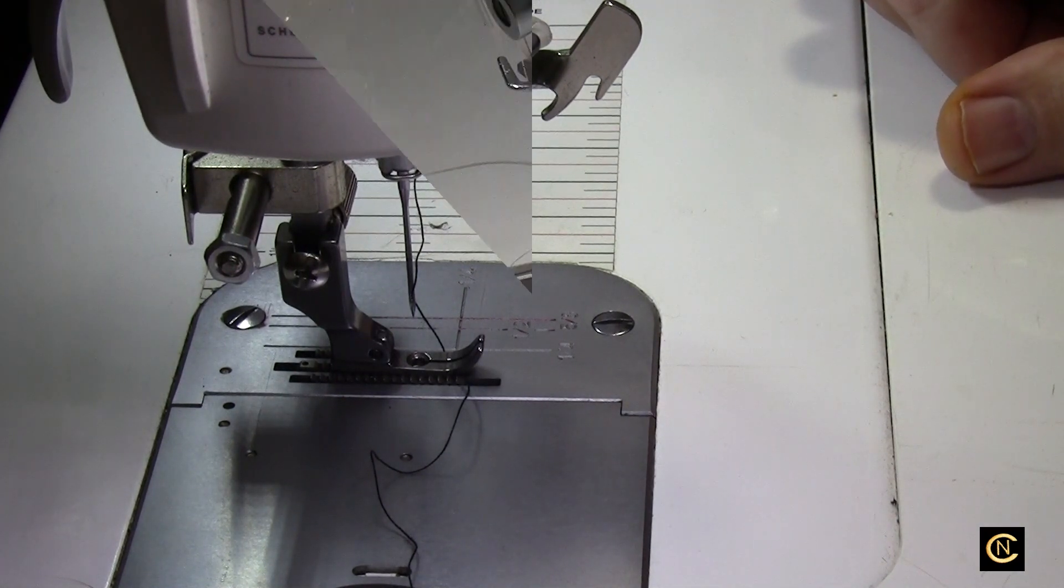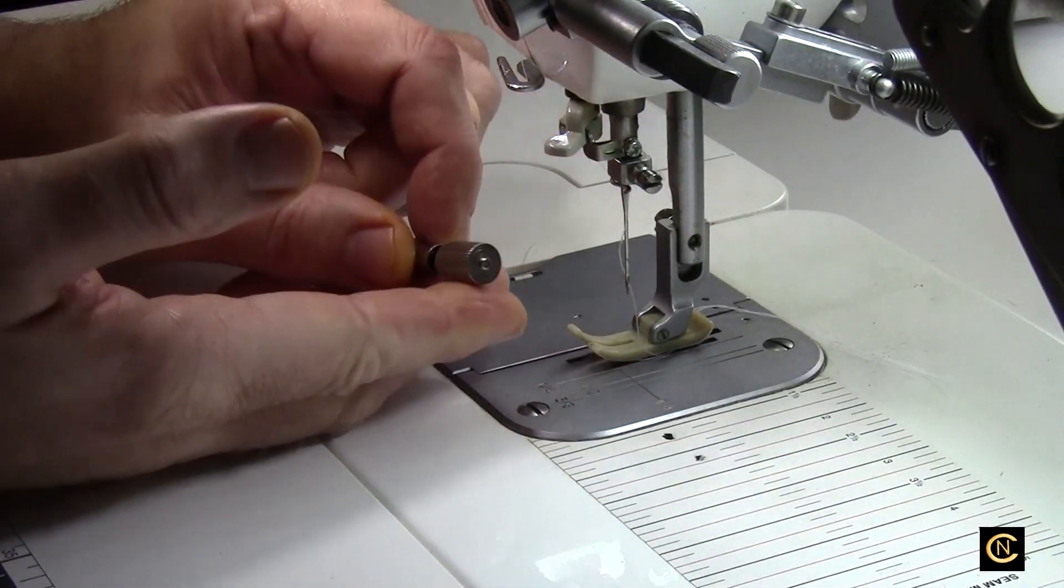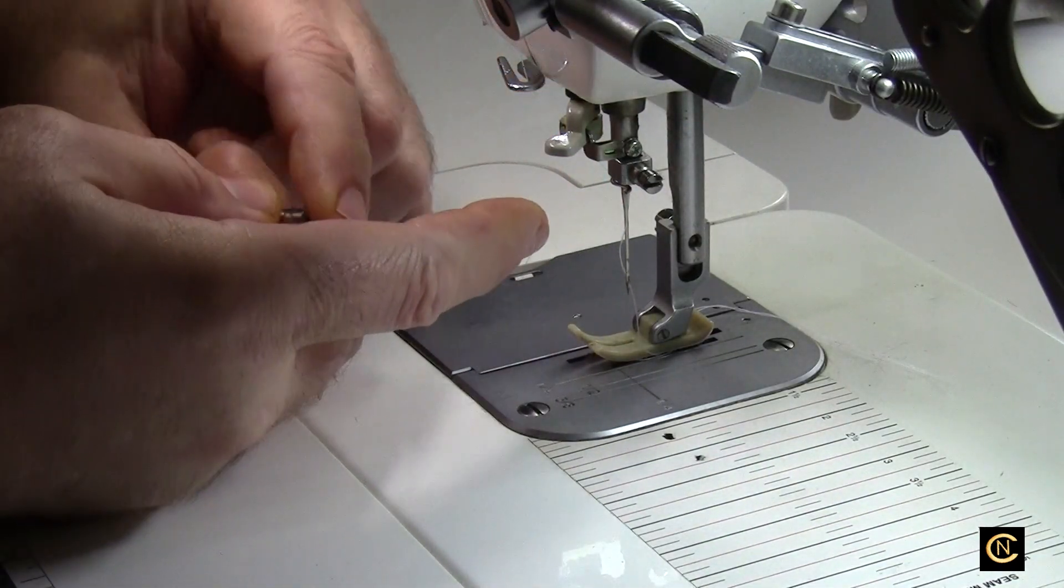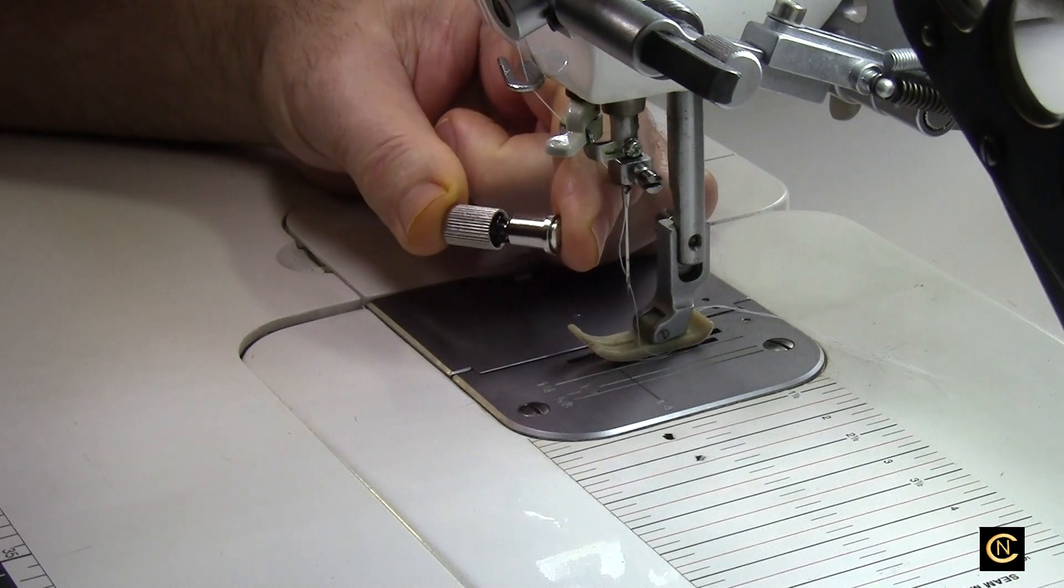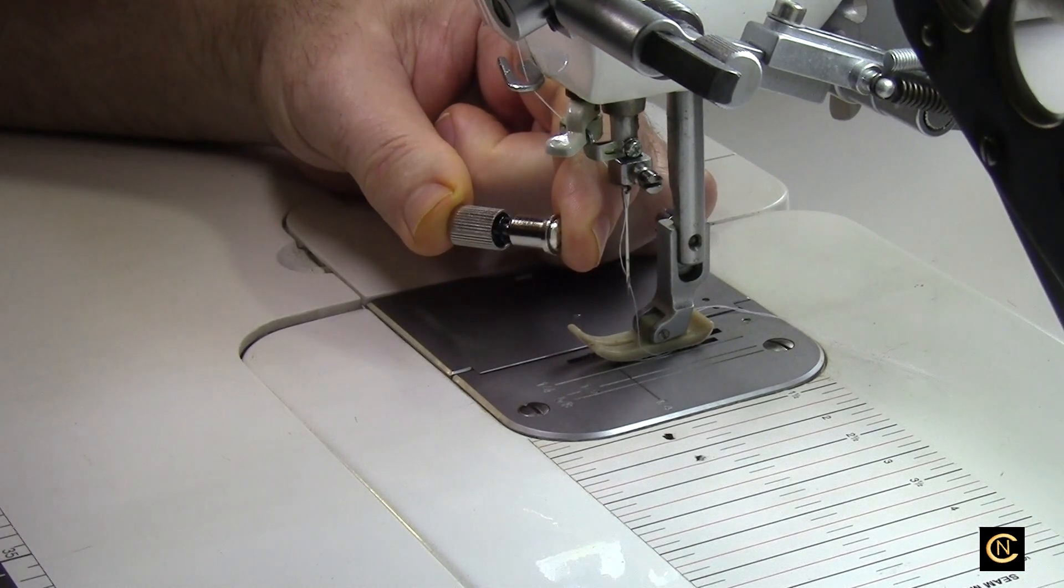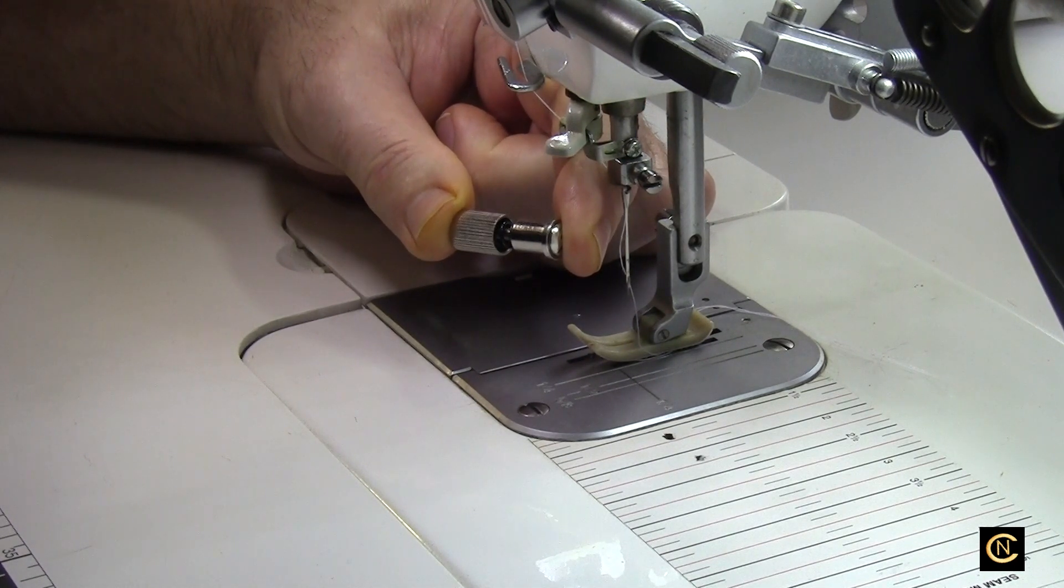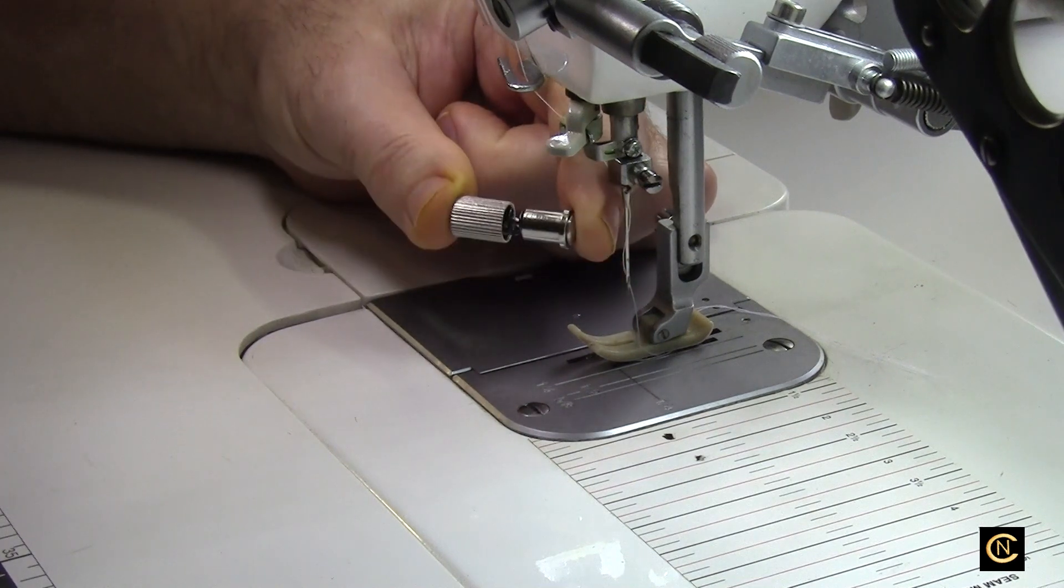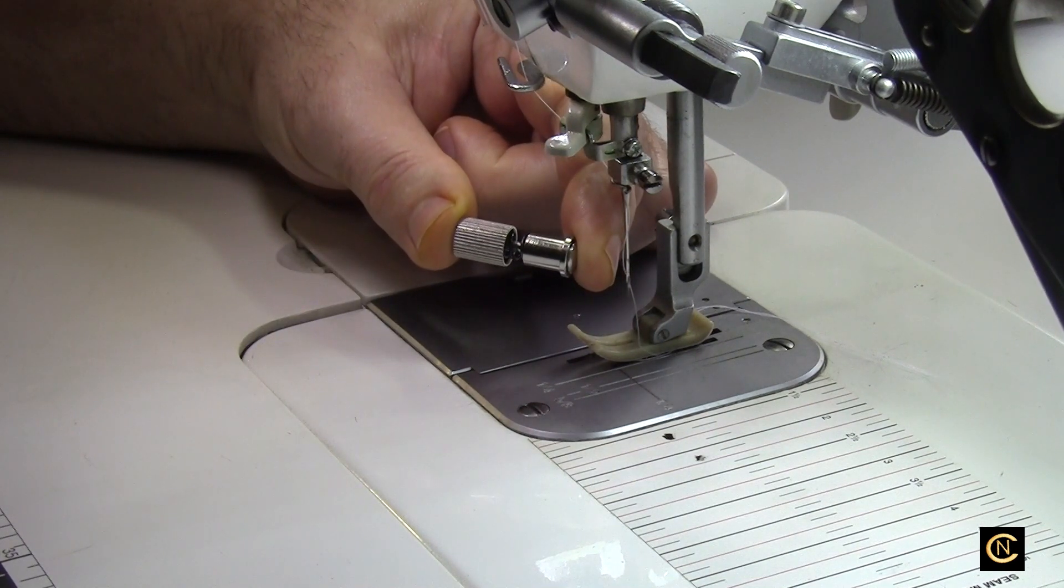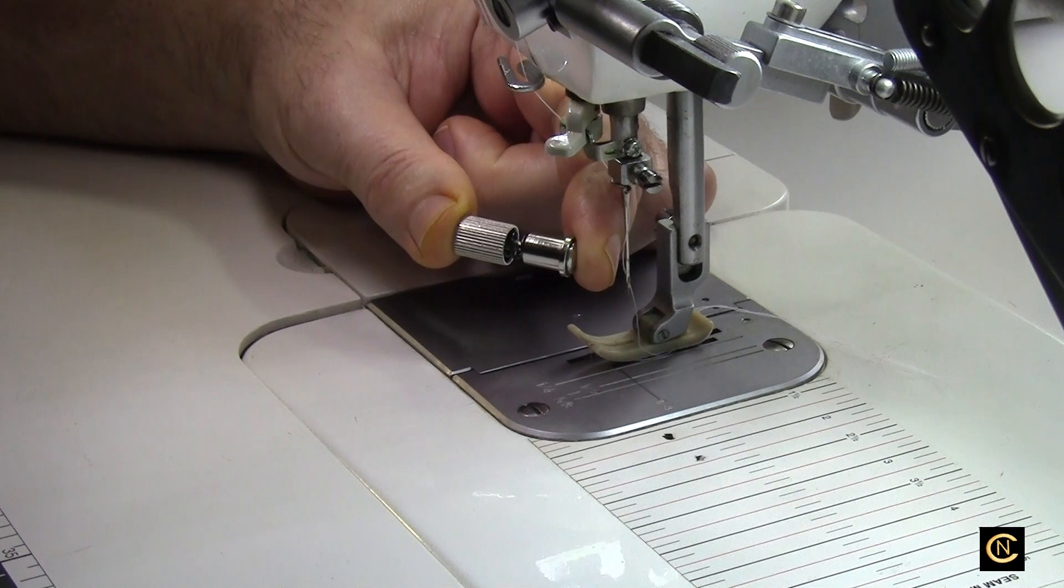Here's what it looks like. This is called the quick change spring clamp for sewing machine presser foot replacement. You can find this anywhere that they sell industrial sewing supplies.